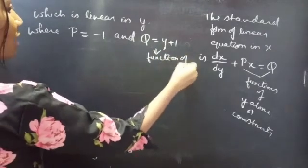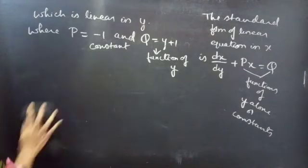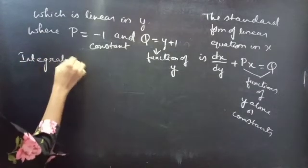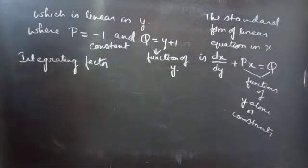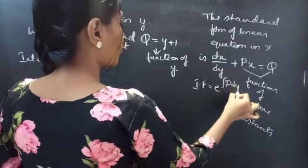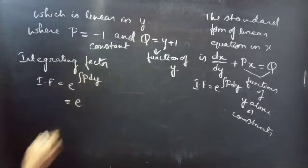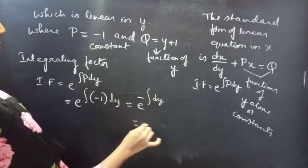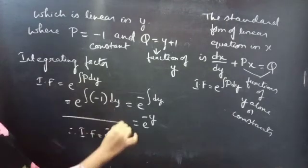Q is a function of y and P is a constant. Now we need to find the integrating factor. We know that the integrating factor of a linear equation in x is given by e^(∫P dy). So, ∫P dy = ∫(−1) dy = −y. Therefore, our integrating factor is e^(−y).